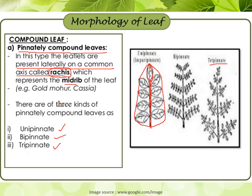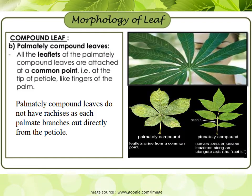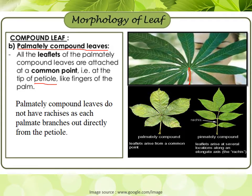The second type of compound leaf is called palmately compound leaf. In palmately compound leaves, all the leaflets are arranged at the apical part of the petiole, and the leaflets arise from the same point in a whorl fashion surrounding the tip. In palmately compound leaves they do not have any rachis, because each leaflet in palmately compound leaves emerges directly from the petiole.